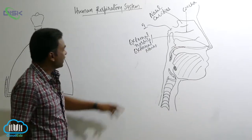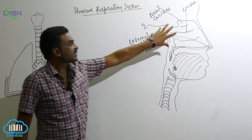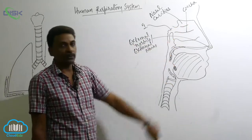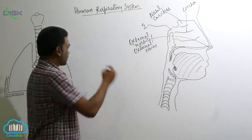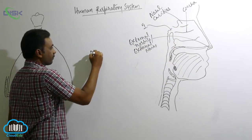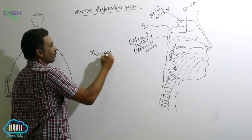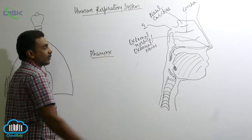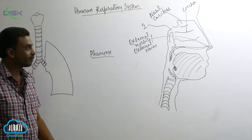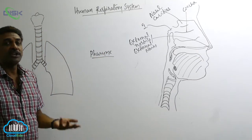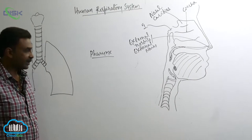The nasal cavities later open into the pharynx. The pharynx is divided into three parts, the first of which is the nasopharynx.